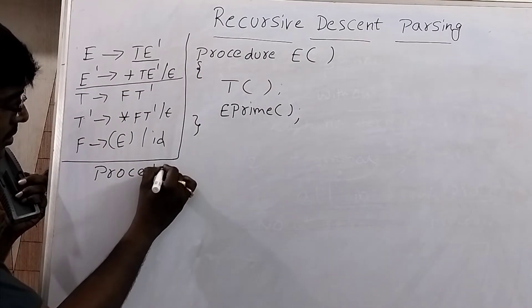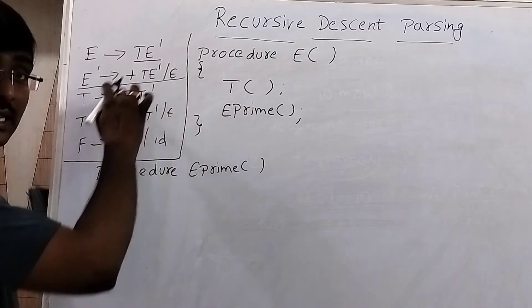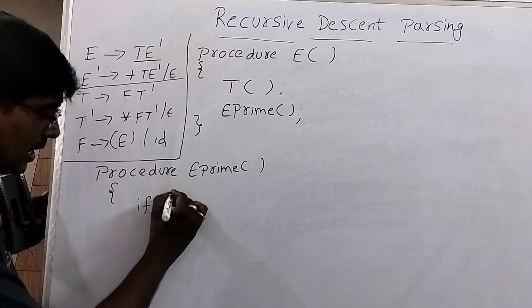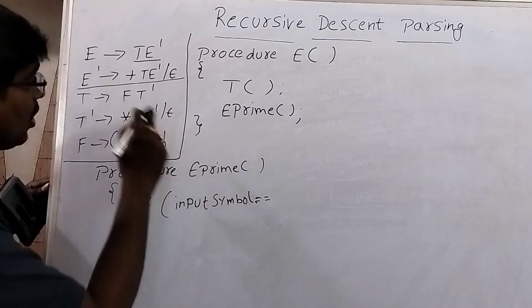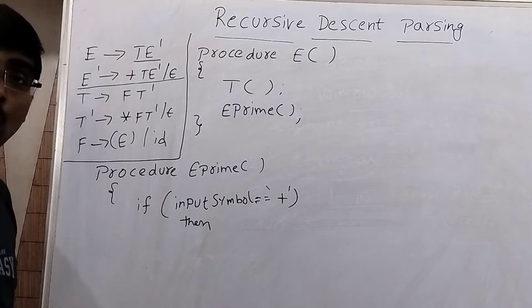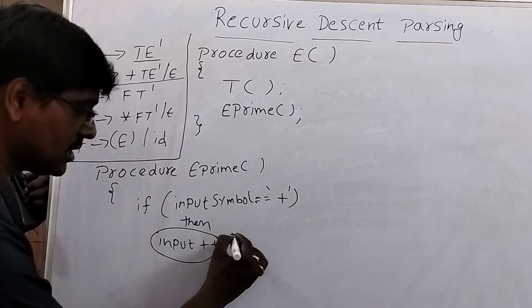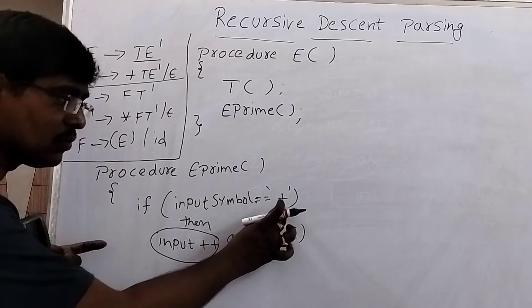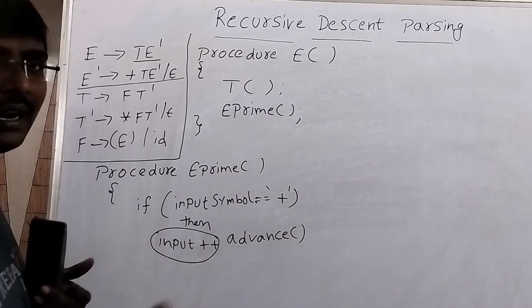Now write procedure E'() — that is E_prime(). Observe the first symbol: it is a terminal. If it is a terminal, you have to perform a comparison operation. So: if input_symbol == '+', then you have to increment the input pointer — input++ — or simply write advance(). Both are the same. For each and every terminal, we write this statement: increment the input pointer or write advance().